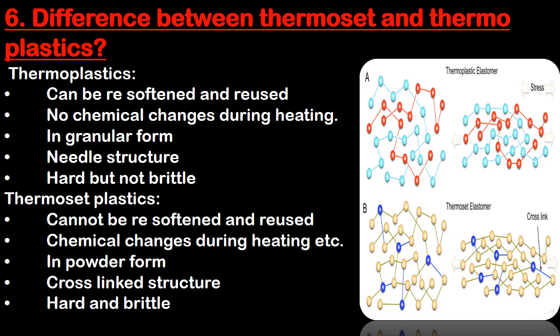Difference between thermoset and thermoplastic: thermoplastic can be re-softened and reused, no chemical changes during heating, in granular form, needle structure, hard but not brittle. Thermoset plastic cannot be re-softened and reused, chemical changes during heating, in powder form and cross-link structure, hard and brittle.